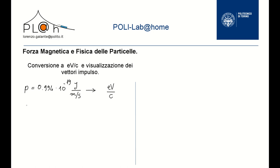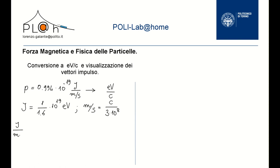To carry out the conversion we have to remember that one joule corresponds to 1 over 1.6 × 10¹⁹ electron volts, and that 1 meter per second is given by the ratio between the speed of light in meters per second and 3 × 10⁸. From these relations we have that 1 joule per meter per second corresponds to 1 over 1.6 × 10¹⁹ electron volts times 3 × 10⁸ divided by c.